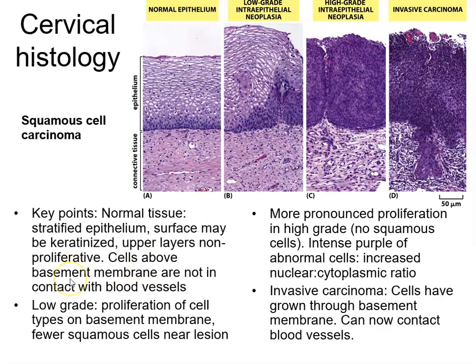That summarises tumour grade. In terms of epithelial cancers, grading is about whether epithelial cells have broken through the basement membrane and entered the mesenchyme — by entering the mesenchyme they can enter blood vessels, and if that has happened it is by definition invasive cancer. Carcinoma in situ and intraepithelial neoplasia are pre-malignant grades. The next video will cover tumour staging.